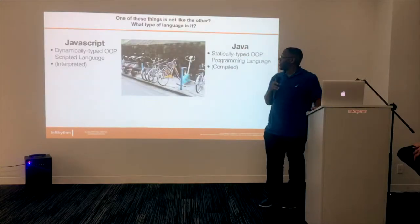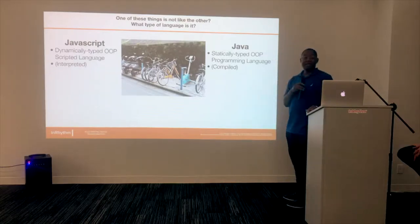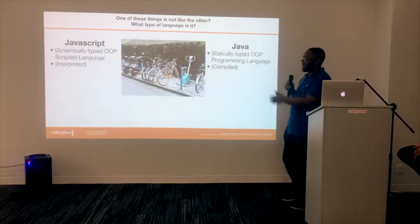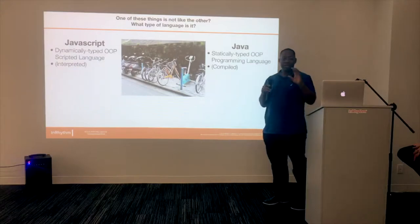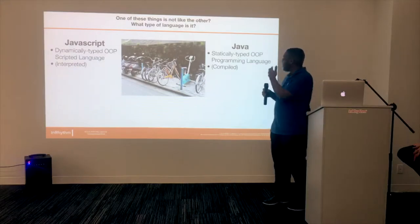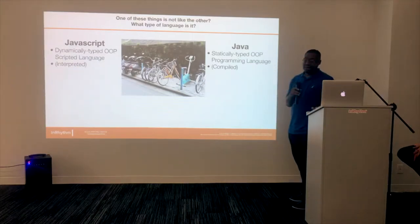One of these things is not like the other. So what type of language is it? JavaScript is a dynamically typed OOP scripted or interpreted language, where Java is a statically typed OOP programming language that is compiled.